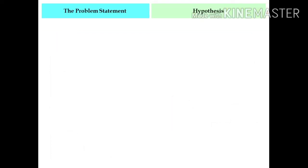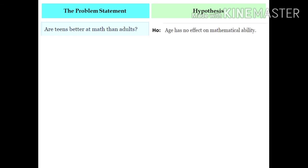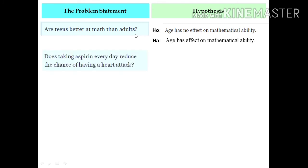Any research investigation should start with a problem statement or question, followed by the null hypothesis and the alternative hypothesis. For example: are teens better at math than adults? The null hypothesis would be: age has no effect on mathematical ability, because we are comparing teens and adults, referring to age as the variable. The alternative hypothesis would be: age has an effect on mathematical ability.